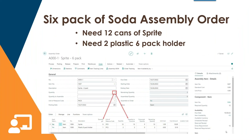Let's go to the assembly order and see how the math works out. In the upper left, the item is a Sprite six pack. In the general section, we have selected that we intend to create two six packs in total. In the line section, you can see the same layout from the BOM — six cans of Sprite and one plastic six pack holder per six pack. Since we intend to make two six packs, the assembly order calls out that we need to consume 12 cans of Sprite and two plastic holders. A dollar value can also be added to the six pack item so the consumer saves when purchasing.